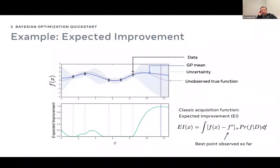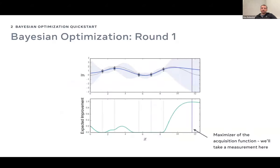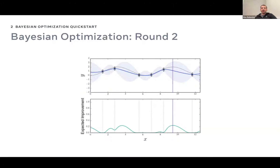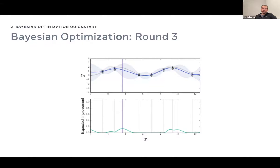In Bayesian optimization, we have the GP posterior — shown here for a one-dimensional function, where blue is the mean and the shaded area is the uncertainty region. If you apply expected improvement, a classic acquisition function, which takes the function value minus the best observed so far, clamps that to zero, and integrates with respect to the posterior density, you get a function whose maximizer tells you where to evaluate next. You make an observation, reduce uncertainty, update the model, and keep going.